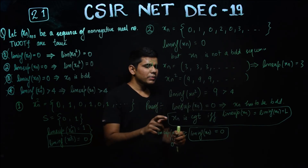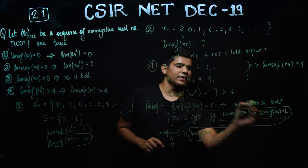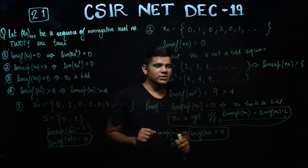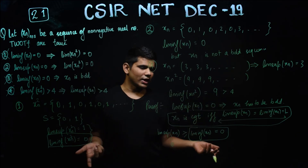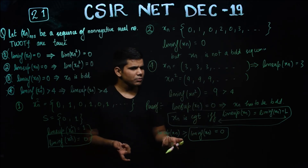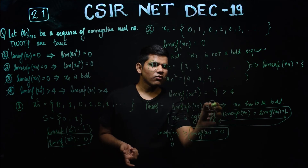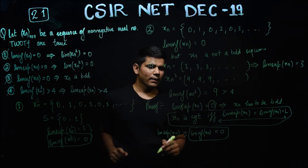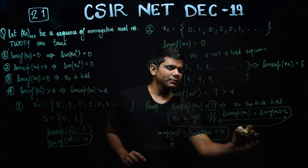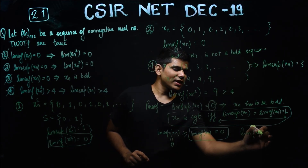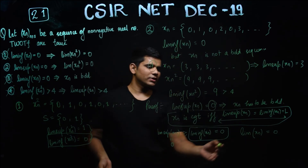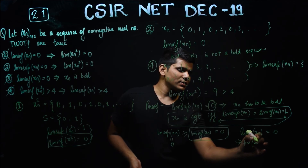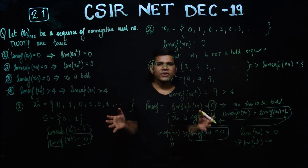From the converse part of the theorem, we can say that Xn is convergent. Since Xn is convergent, it has a unique limit point, and that limit point is zero. So the limit of Xn is zero. Since the limit of Xn is zero, it is obvious that the limit of Xn squared is also zero.